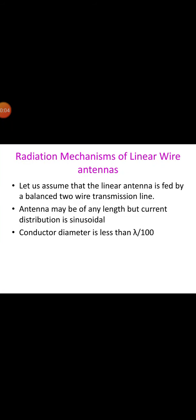Welcome to this module. In this presentation we will be looking at the radiation mechanism of linear wire antennas. Let us assume that the antennas are symmetrically fed at the center by a balanced two-wire transmission line. The antenna may be of any length, but it is assumed that the current distribution is sinusoidal. Current distribution measurements indicate that this is a good assumption provided that the antenna is thin, that is when the conductor diameter is less than lambda/100. Thus the sinusoidal current distribution approximates the natural distribution on thin antennas.